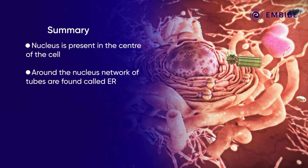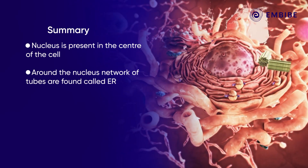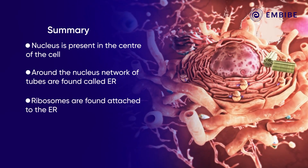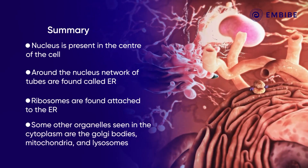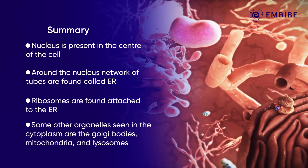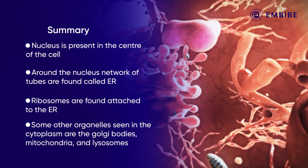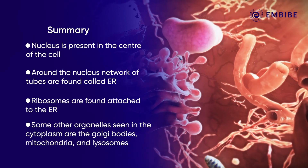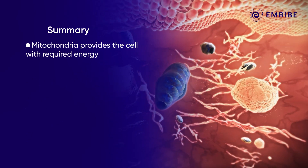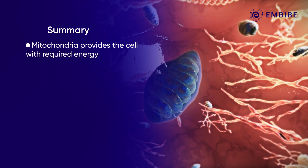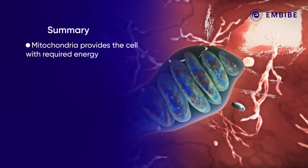Around the nucleus we find some ribosomes and a network of tubes called the ER. Other organelles seen in the cytoplasm are the Golgi bodies and the lysosomes. We also find mitochondria in the cell, which provide the cell with the required energy.